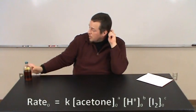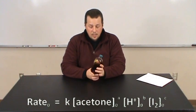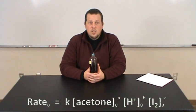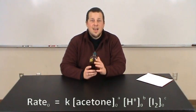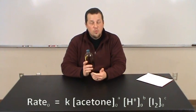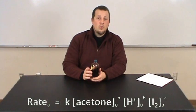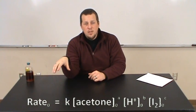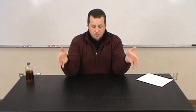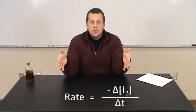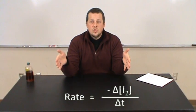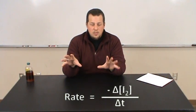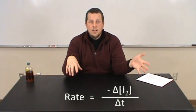Now the other nice thing about this reaction is iodine is pretty easy for us to manipulate as far as determining the rate of the reaction. For this reaction, that initial rate from the rate law expression is really just equal to the rate of the disappearance of iodine. So the rate of the reaction equals the change in iodine concentration divided by the change in time.